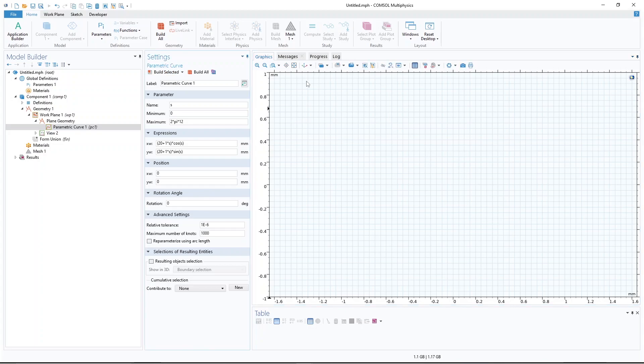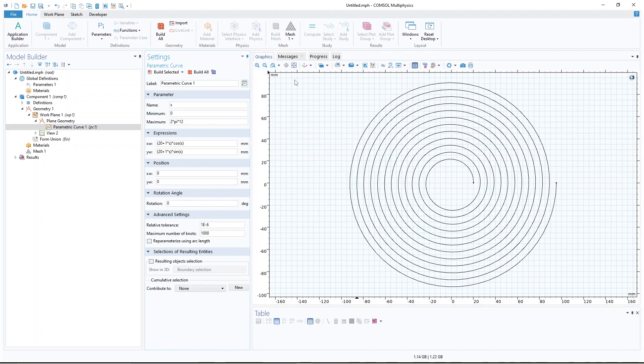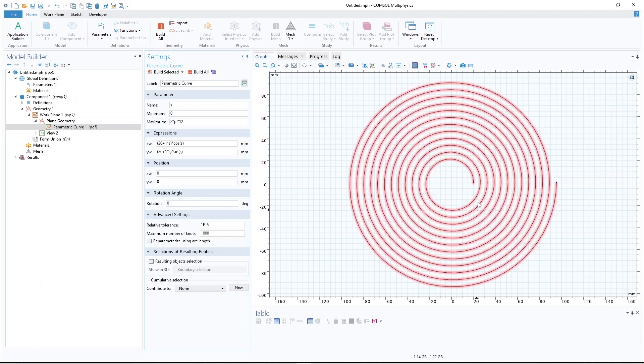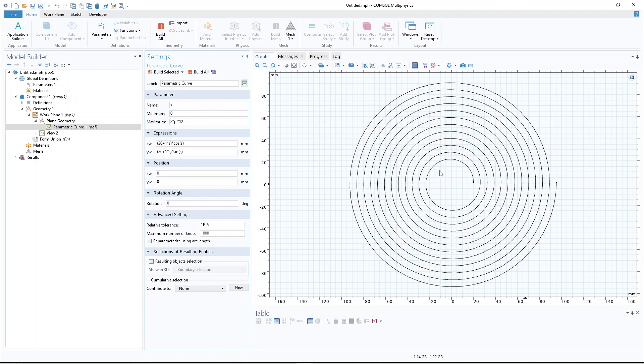Okay, let's see what does this produce. Yes, here we produce the spiral which starts from point 20, and it has 12 turns, and the gap between the sections is 2π times b. b is 1, so it's 2π. It's around 6.28 millimeters.